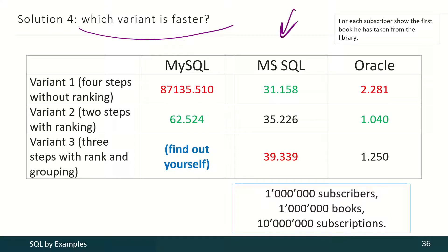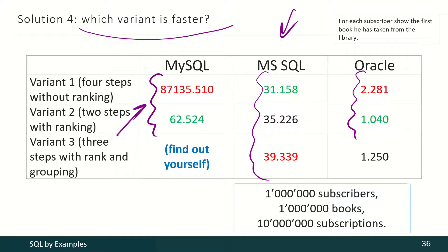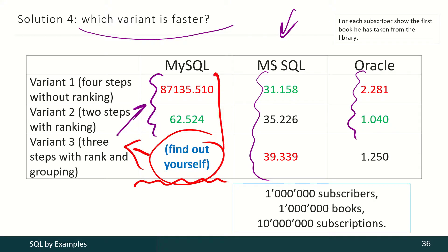If we compare the performance of these solutions, for Microsoft SQL Server the difference between approaches is not so significant. For Oracle it's already about two times. And see the difference for MySQL — it's huge. This is an advanced task for you: please conduct an experiment and find out how fast this variant is for MySQL.